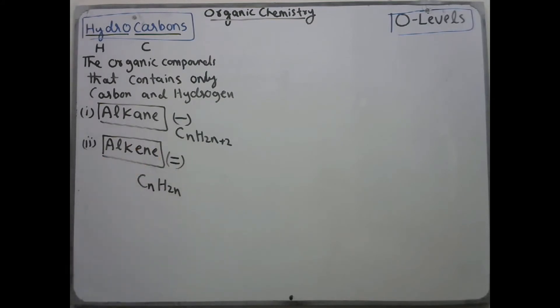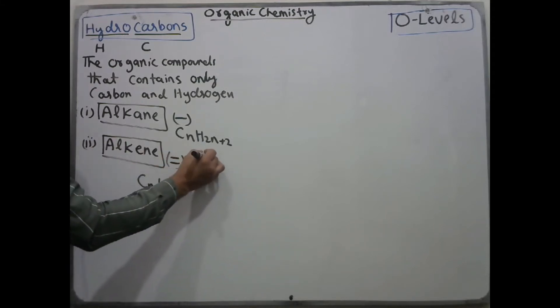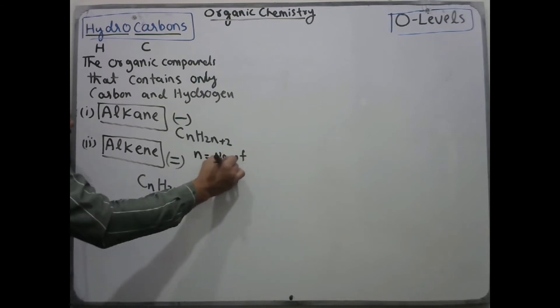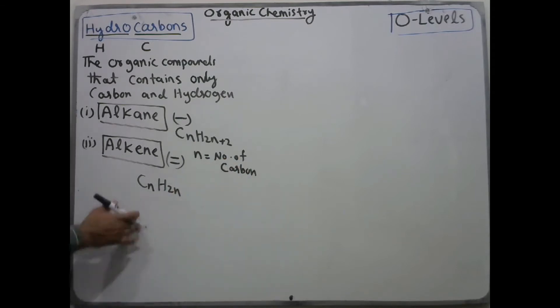Here, n shows the number of carbon atoms. N represents the number of carbon atoms present in an organic compound.